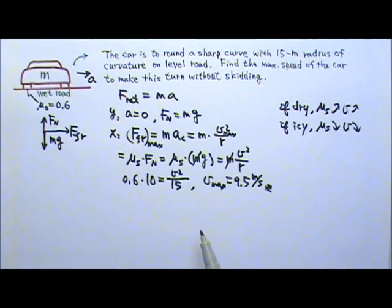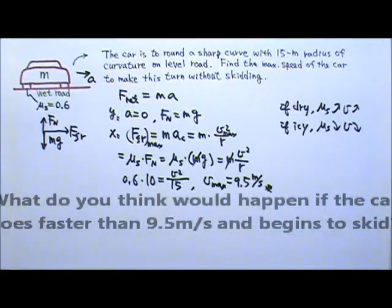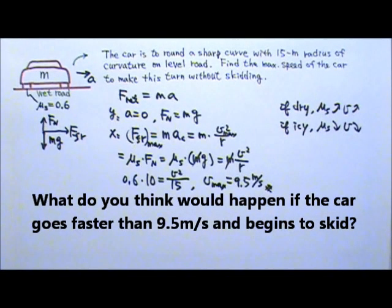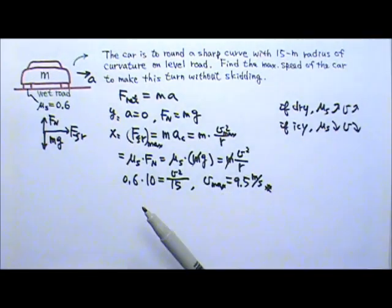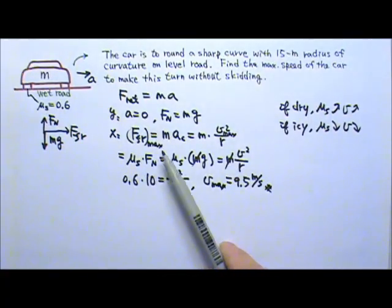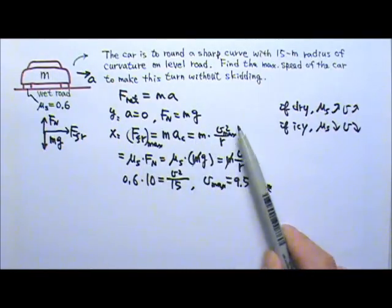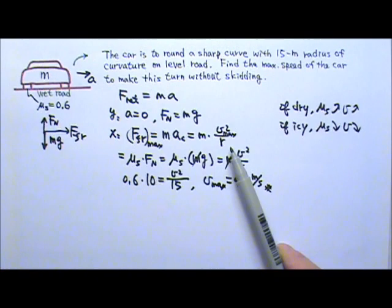What would happen if the car goes faster than 9.5 meters per second and begins to skid? The moment the car starts to skid, the friction becomes kinetic friction. And kinetic friction is usually less than the maximum static friction. Less friction means less force to keep the car in circular motion, so the car could go off the road and may result in an accident.